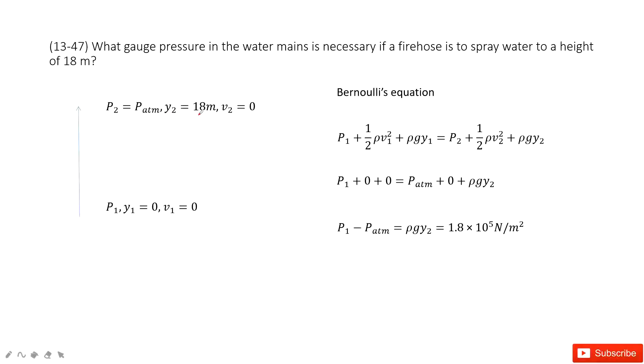So in this one, we consider Bernoulli's equation. So first time at the initial point, we have the pressure p1, which we don't know, we need to find it. And we have the y1 is zero, it's bottom. We take it as reference point. v1 is zero because the water is not moved as air.